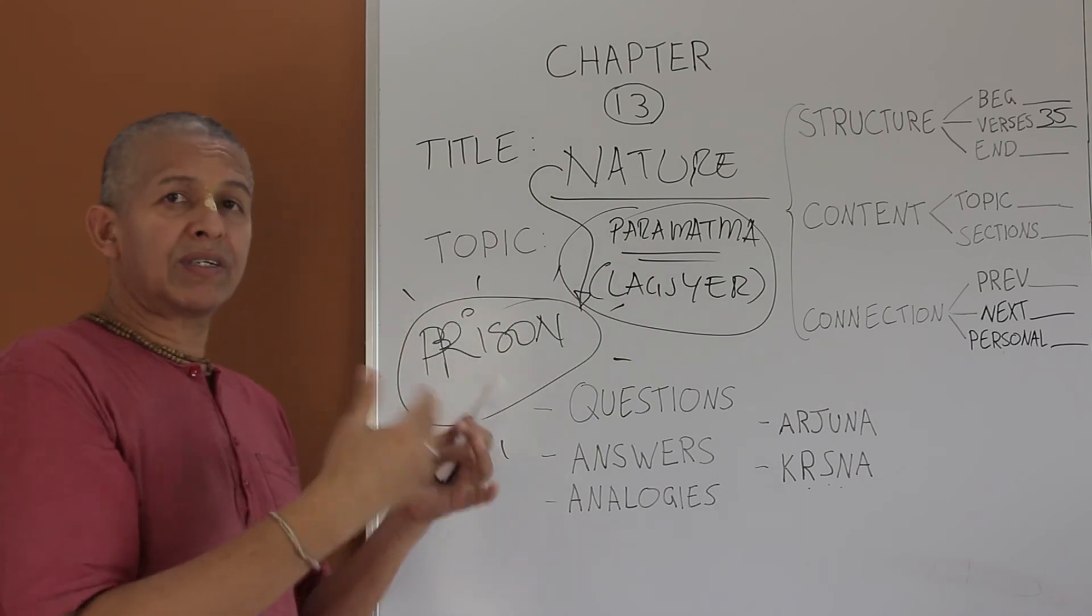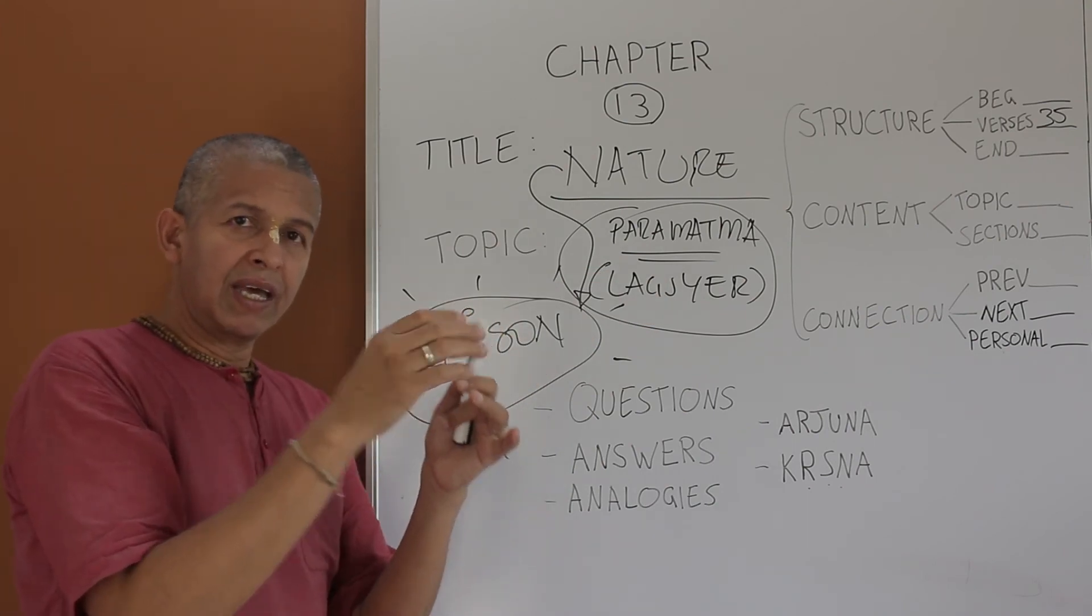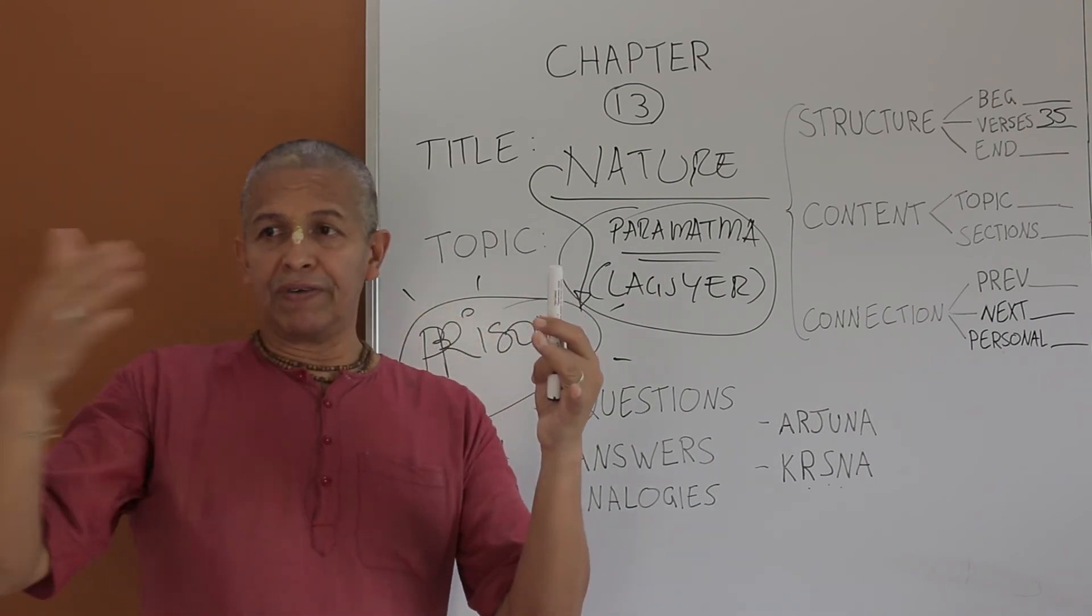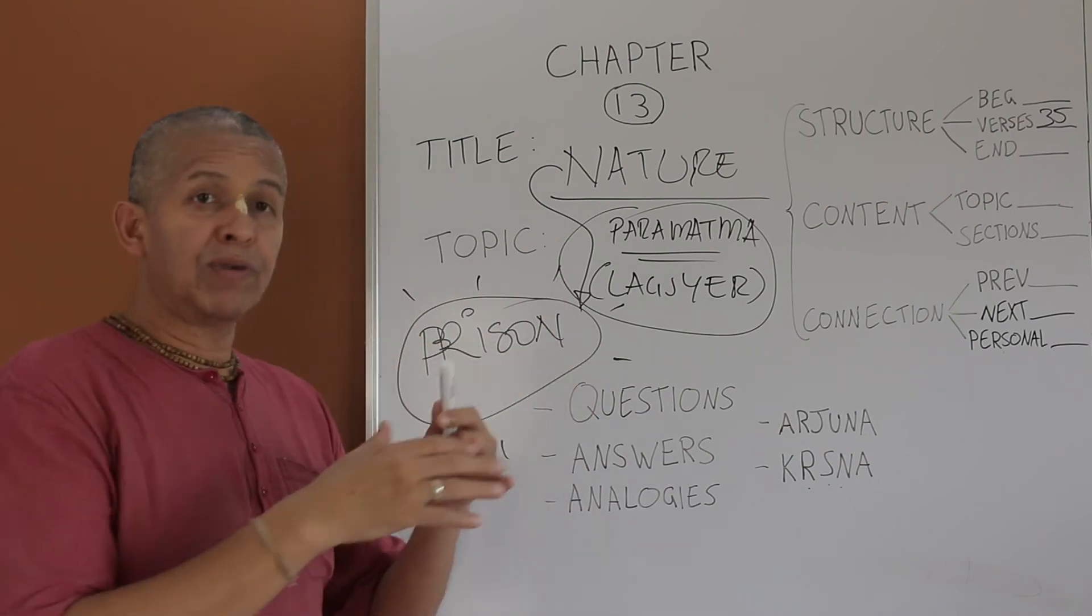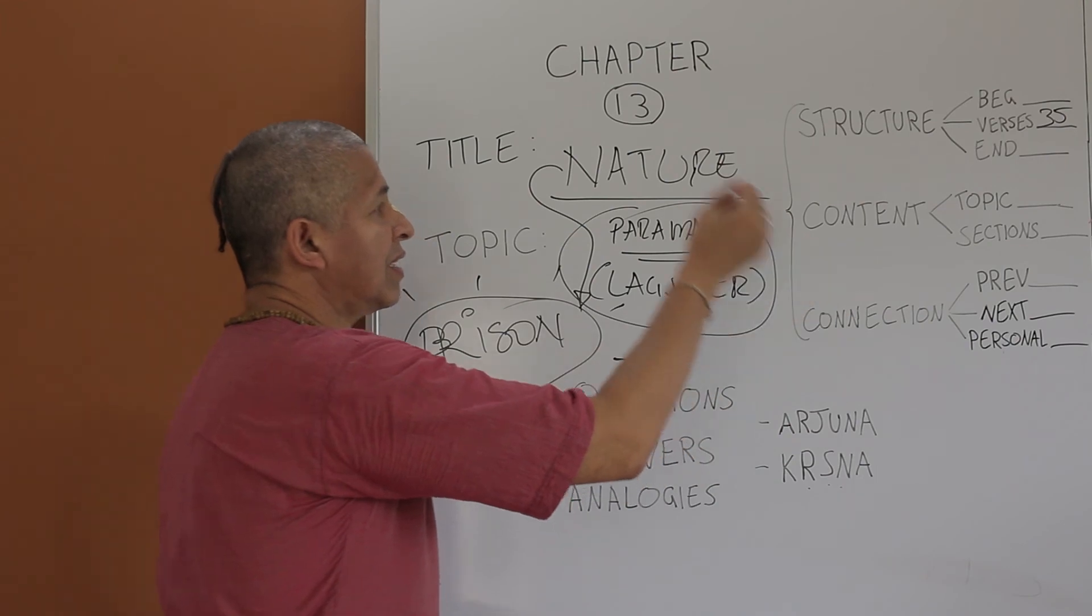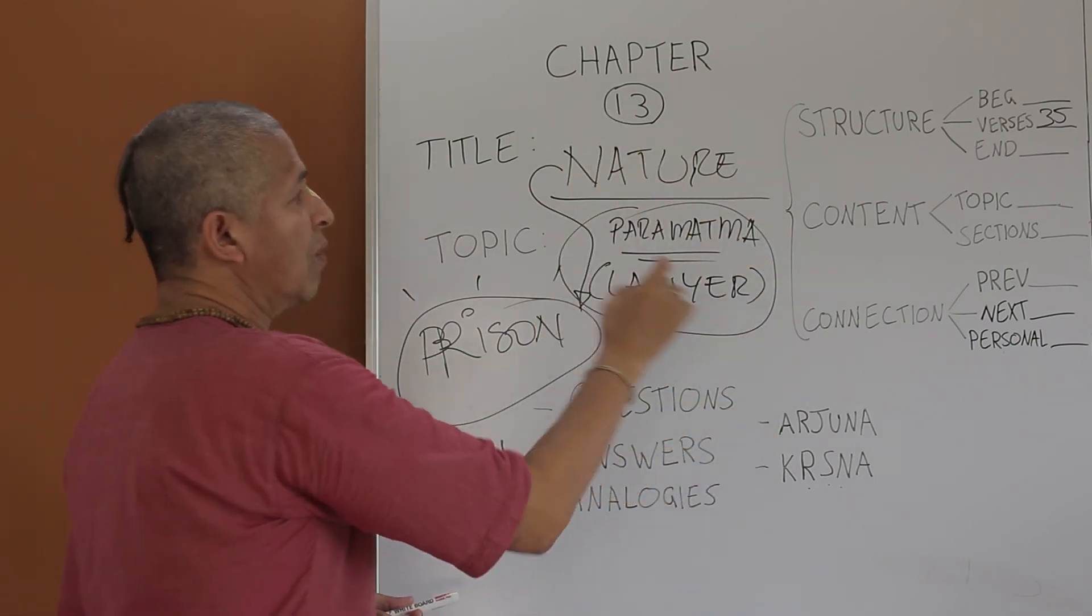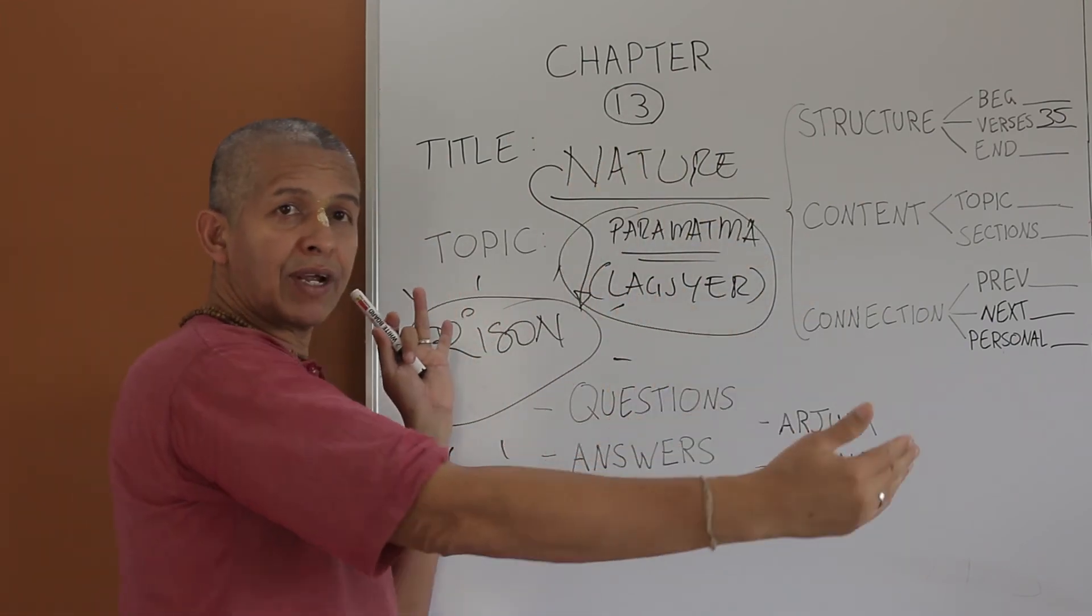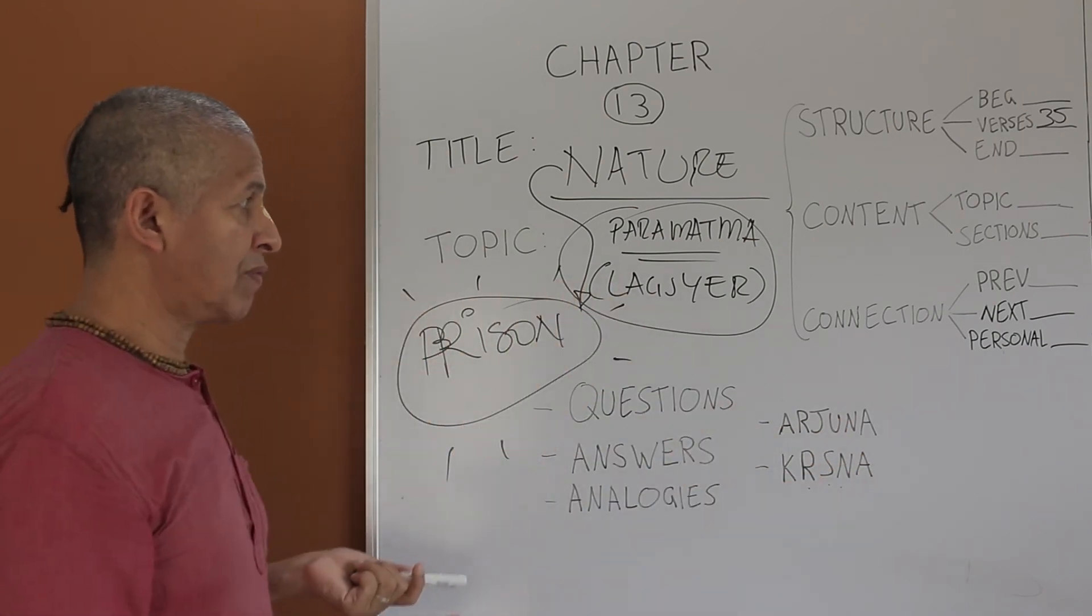When he refers to that, as generally Krishna does, he refers to something briefly, and then in the future chapter or section of the Gita, he will explain in a more elaborate way. So the connection with the next chapter is that, in the next chapter, what he has briefly mentioned, he will elaborate completely in chapter 14.